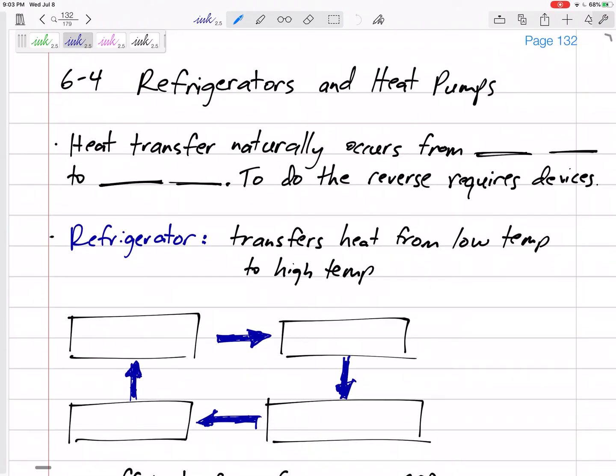Alright, so let's talk about refrigerators and heat pumps. These are used to transfer heat from low temperature to high temperature places. Heat transfer naturally goes from higher temperature to lower temperature. But if we want to do the reverse, like let's say I've got a Coca-Cola that is kind of cool, if I just leave it in my house, it's going to warm up to the room temperature.